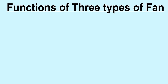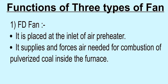In short, the function of these three types of fans is as follows. FD Fan is placed at the inlet of the air pre-heater. It supplies and forces the air needed for combustion of pulverized coal inside the furnace.